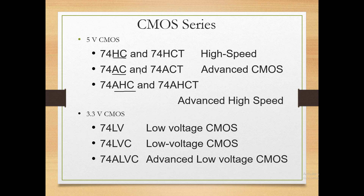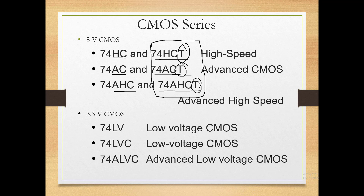There is also the 74HCT, 74ACT, and 74AHCT series. The 'T' added at the end indicates TTL compatibility — CMOS and TTL are two different technologies, but these series are compatible with TTL. So 74HCT, ACT, and AHCT can be used with TTL ICs — this series is TTL-compatible, which makes them different from standard CMOS.